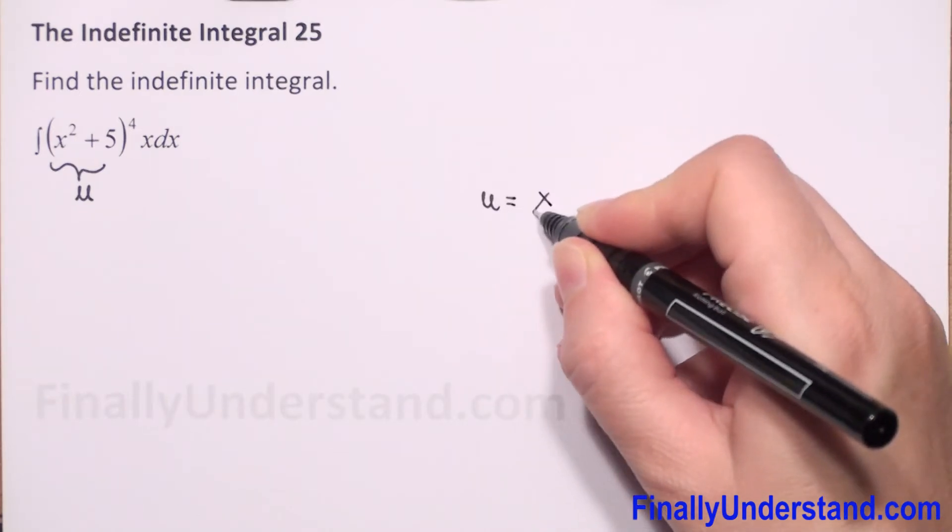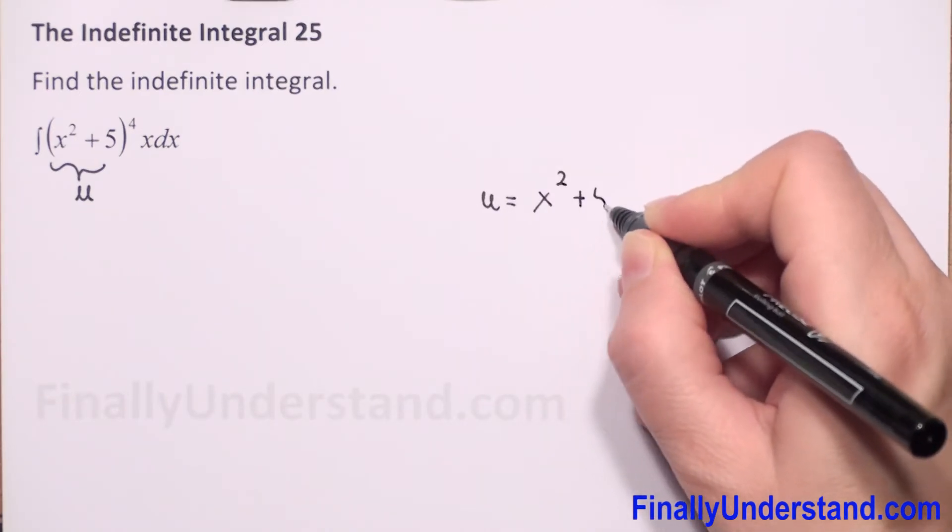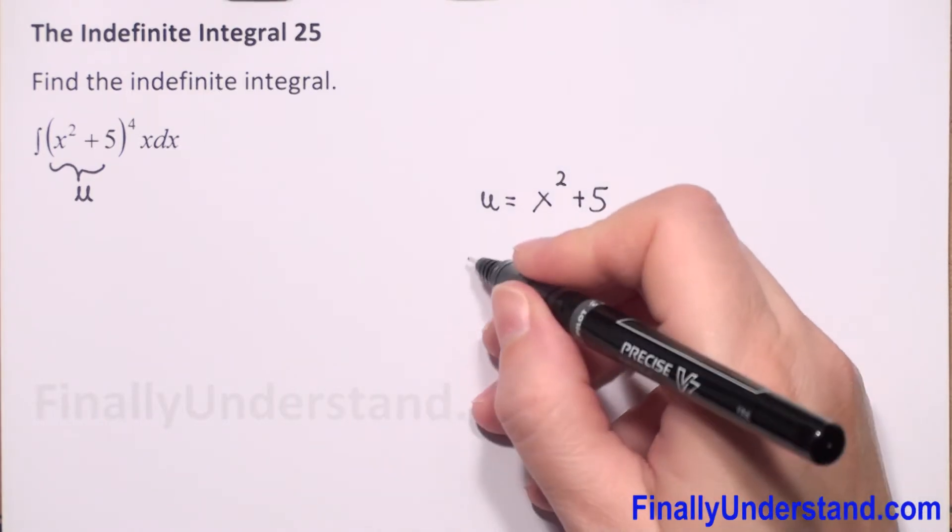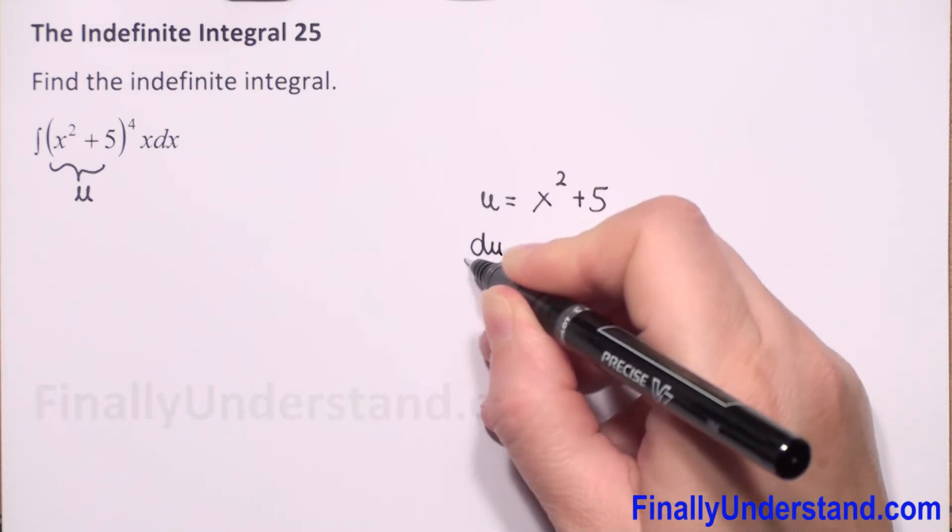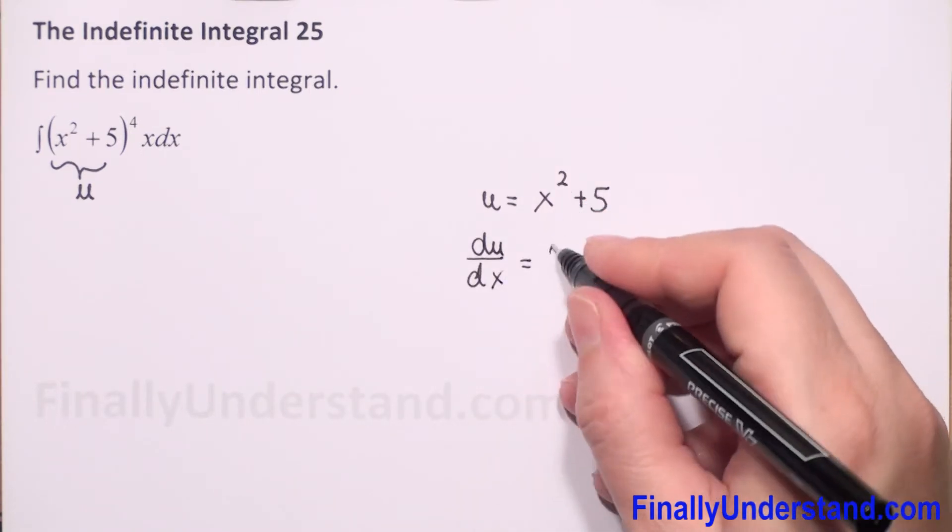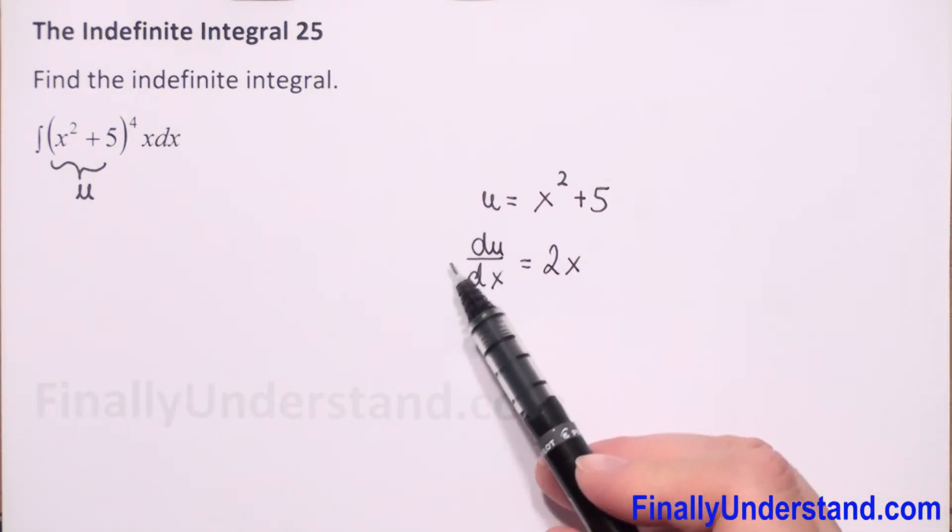u is equal to x square plus 5. Now we need to find the derivative of both sides of our equation with respect to x. So du/dx is equal to the derivative of x square, which is 2x.